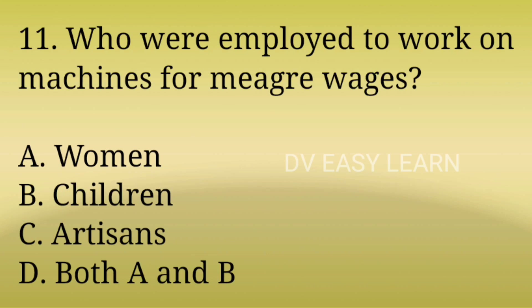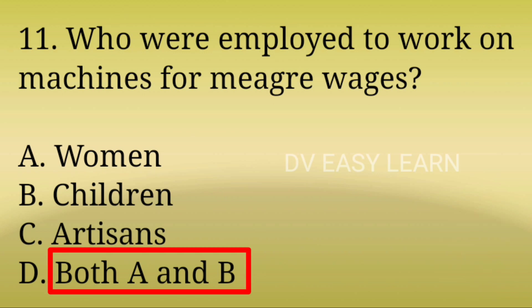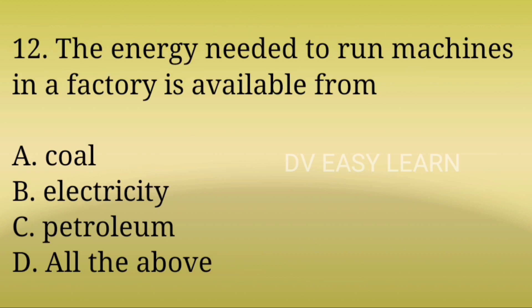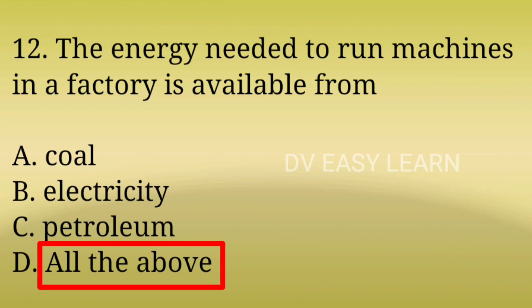11th Question: Who are employed to work on machines for meager wages? Correct answer: Both A and B — women and children. 12th Question: The energy needed to run machines in a factory is available from? Correct answer: All of the above — coal, electricity, and petroleum.